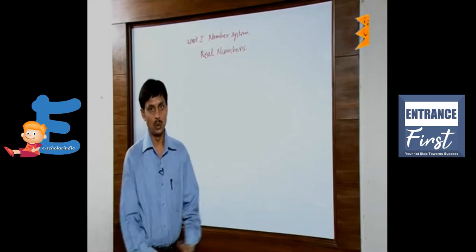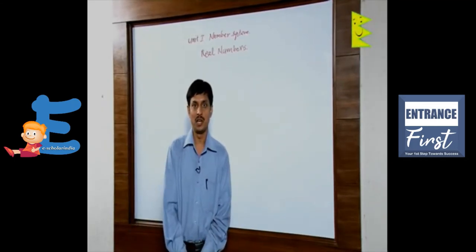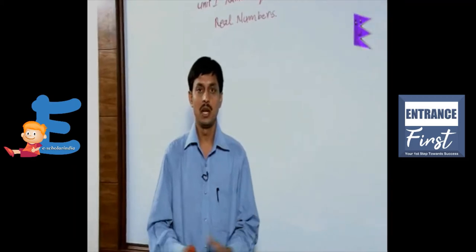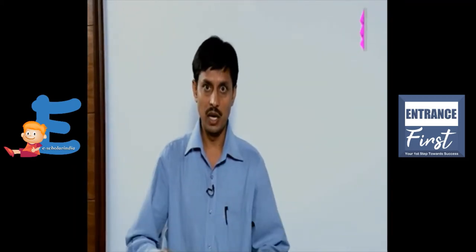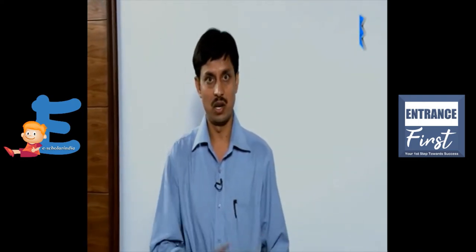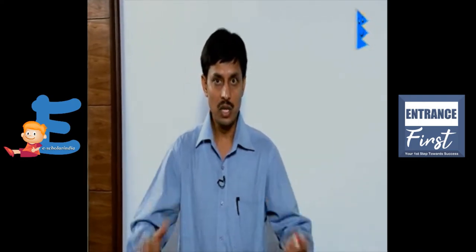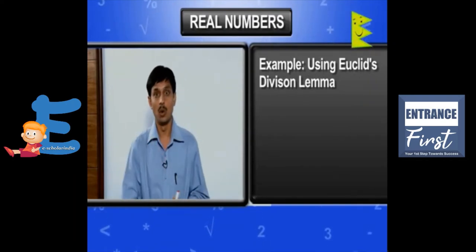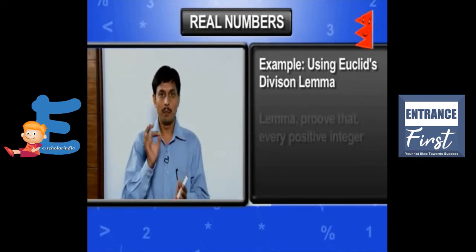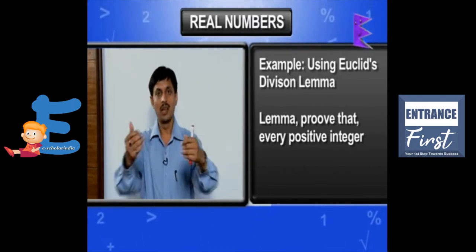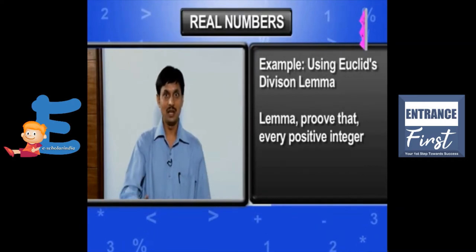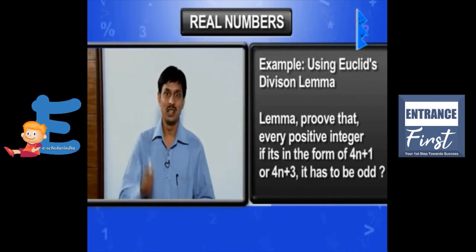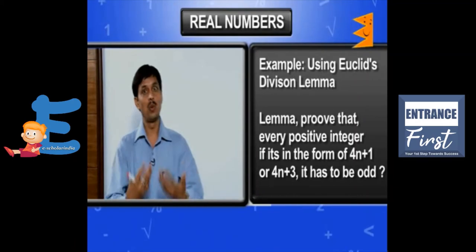We will now discuss the application of Euclid's Division Lemma to solve some general results. Using the lemma, suppose there is any positive integer greater than 4 and you are required to prove that any such positive integer greater than 4 can be expressed in the form of 4n plus 1 or 4n plus 3.